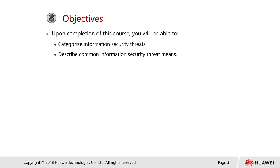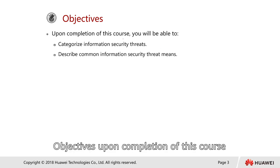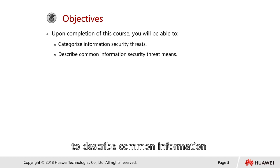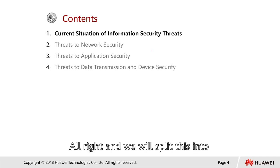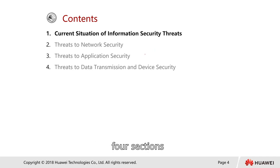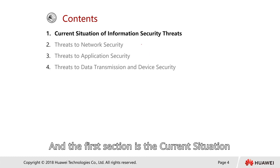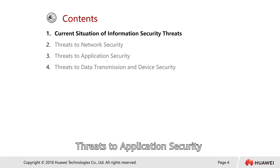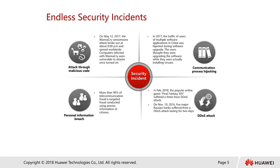Upon completion of this course, we should be able to categorize information security threats and describe common information security threats. We will split this into four sections: the current situation of information security threats, threats to network security, threats to application security, threats to data transmission, and threats to device security.